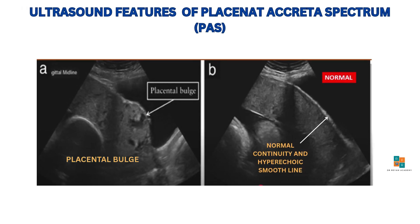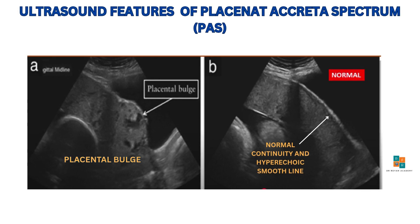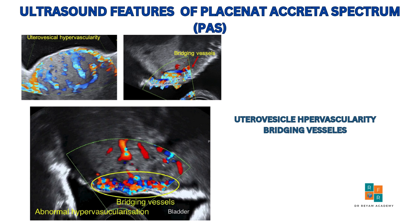In this image, we can see another feature of accreta, which is abnormal bulging of the placenta extending toward the bladder, in contrast to the normal smooth hyperechoic line typically seen with normal placental implantation. Because of abnormal angiogenesis that occurs in placenta accreta spectrum, color Doppler may reveal utero-vesical hypervascularity, which represents unusually high blood flow between the uterus and the bladder. Another important feature is the presence of bridging vessels — abnormal blood vessels running from the placenta across the myometrium and serosa toward the bladder, often oriented perpendicularly to the myometrium.